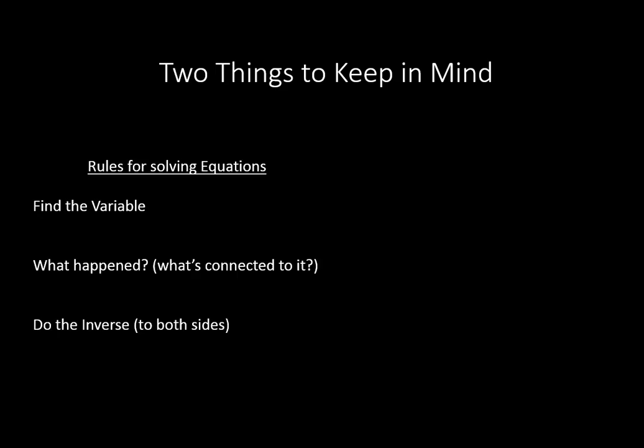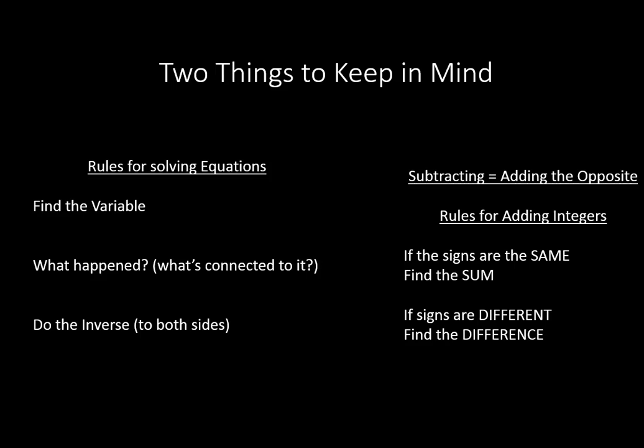So two things to keep in mind when we're solving for x with any equation is that we need to find the variable, ask ourselves what happened to that variable, or what's connected to it, and then do the inverse to both sides of the equation. For subtracting specifically, we need to remember that subtracting is the same thing as adding the opposite. And our rules for adding say if the signs are the same, you find the sum. If the signs are different, find the difference. Hope that lesson's been helpful for you. Have a wonderful day.